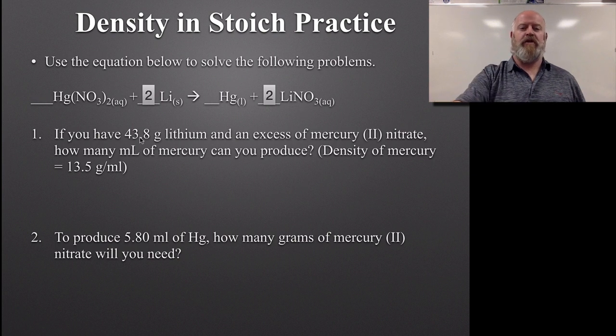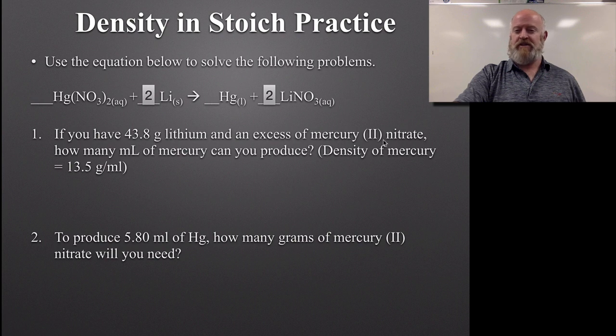And if we have 43.8 grams of lithium and an excess of mercury nitrate - excess, again, means to ignore this for now - how many milliliters of mercury can you produce? Again, we know the density of that. So let's go to the board and let's solve this thing.